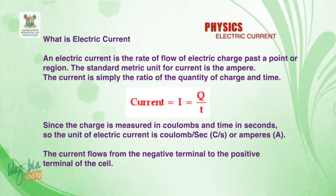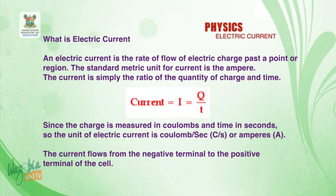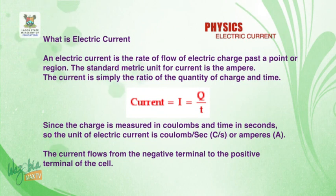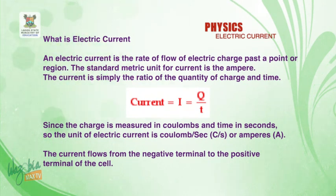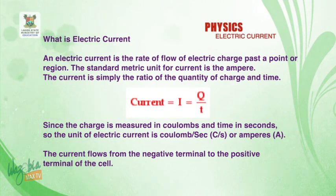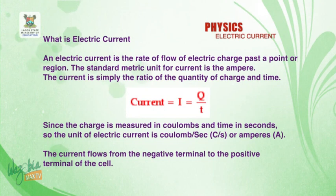Since charge is measured in coulombs and time is in seconds, the unit of electric current is coulombs per second, or ampere. The current flows from the negative terminal to the positive terminal of the cell.